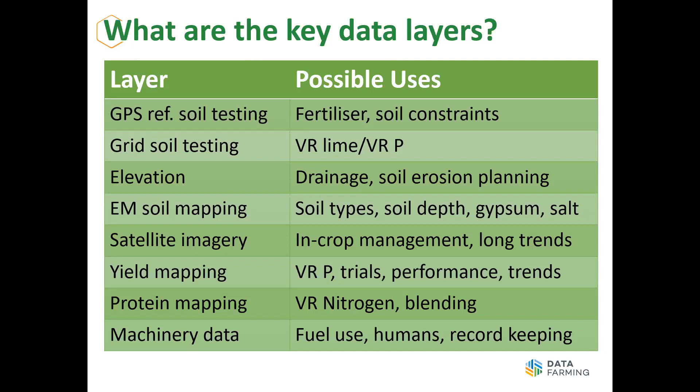Yes, you're going to spend more money on soil testing — probably three times as much — but you're going to get ten times the information. We've got to draw a line in the sand and get away from just a general drive across the paddock to collect samples. There's been a big push for grid soil testing in the south, particularly around lime and phosphate, where paddock history plays a role and other layers like EM don't always pick up those differences. Elevation mapping is a really good layer — drainage is a major problem in grain growing areas of Australia and is probably one of our biggest constraints.